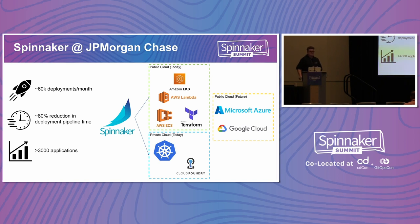In terms of why Spinnaker: we've had a lot of testimonials, particularly around people deploying to Cloud Foundry with legacy tooling. They've seen a huge reduction in time for deployments — our legacy tool would do deployments in sequence, so with Spinnaker there's no need for that. Right now we've got over 4,000 applications in Spinnaker. We have two instances running — private cloud and public cloud — although we're trying to merge those into one hybrid instance.